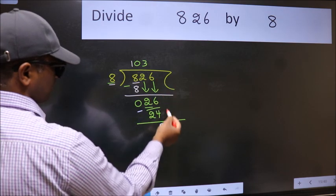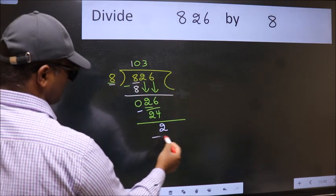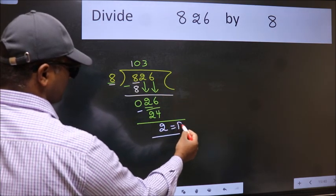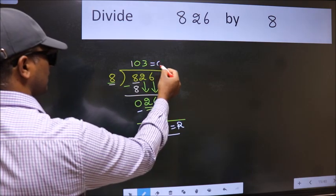No more numbers to bring down. So we stop here. This is our remainder and this is our quotient.